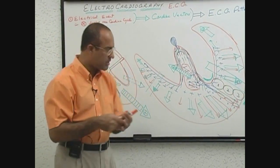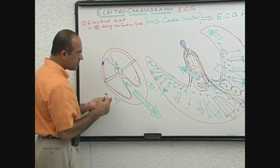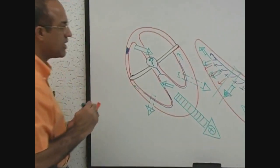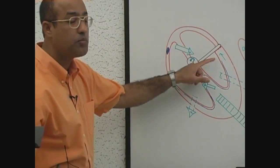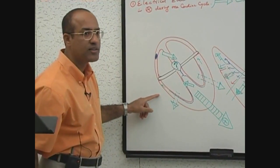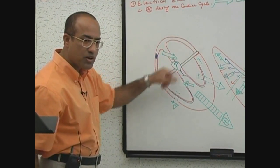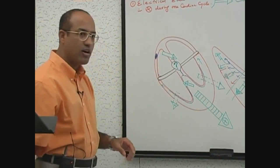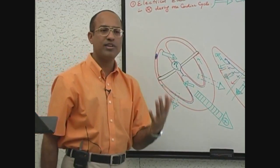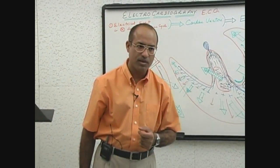Why is the basal depolarization moving upward and rightward? Because this vector and this one are both moving upward and rightward, representing ventricular basal depolarization — the last depolarizing event. These are small vectors moving upward and rightward. Remember, all these electrical vectors produced in the ventricles are fast vectors, because the ventricles have a specialized fast conduction system called the Purkinje system.